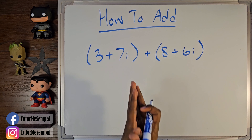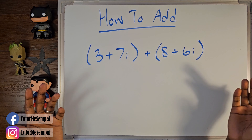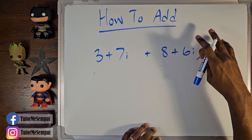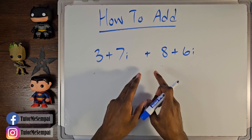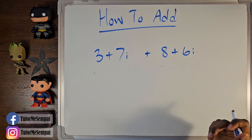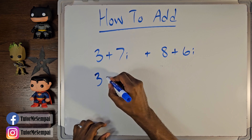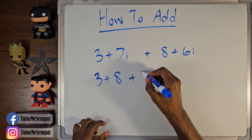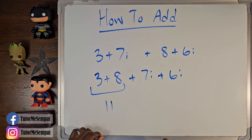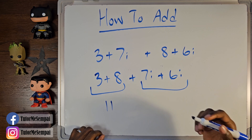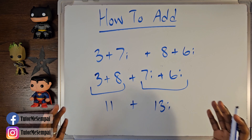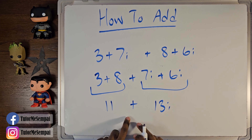The first thing we want to do for this example is to drop our parentheses. We're adding, so there's nothing we need to do specifically — we can simply drop the parentheses. When we do that, we're left with 3 plus 7i plus 8 plus 6i. We can rewrite this as 3 plus 8, plus 7i plus 6i. When you add 3 plus 8, you get 11. And when you add 7i plus 6i, you get 13i. The resulting complex number is 11 plus 13i.